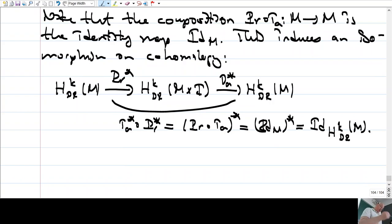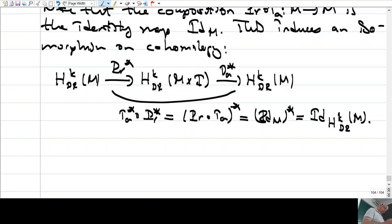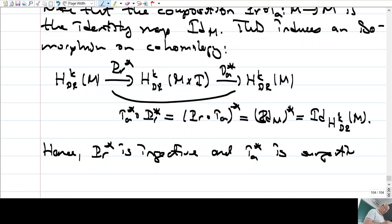Therefore, this implies what? This composition is identity, hence PR star is injective and IA star is surjective. And these are vector space homomorphisms.